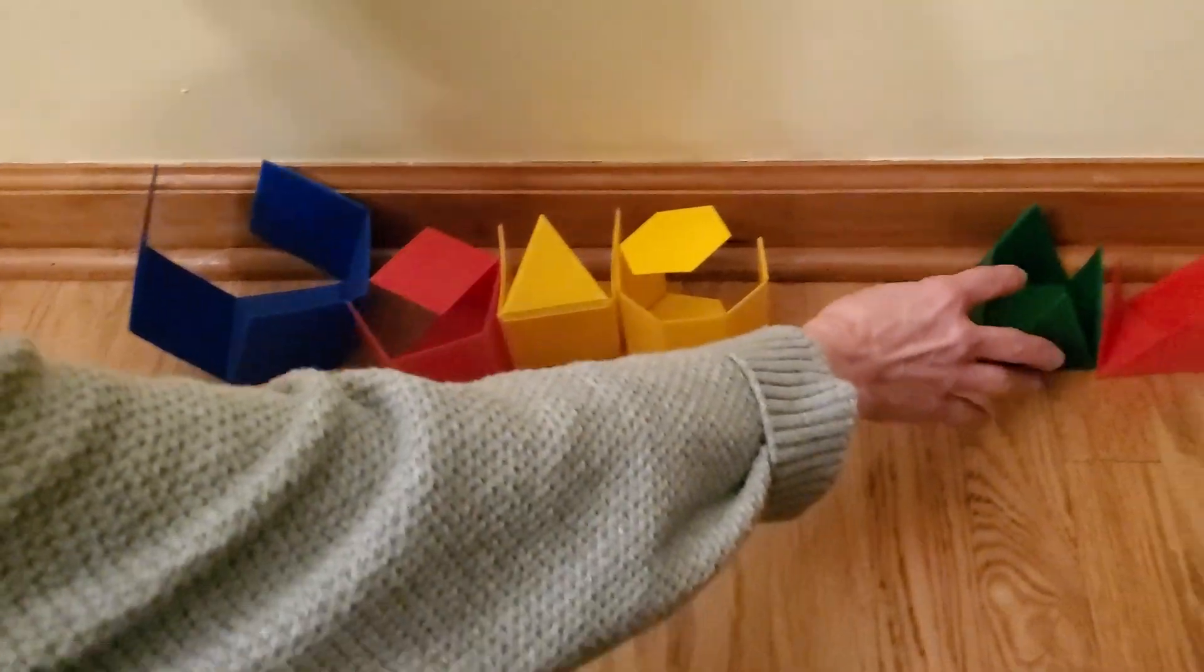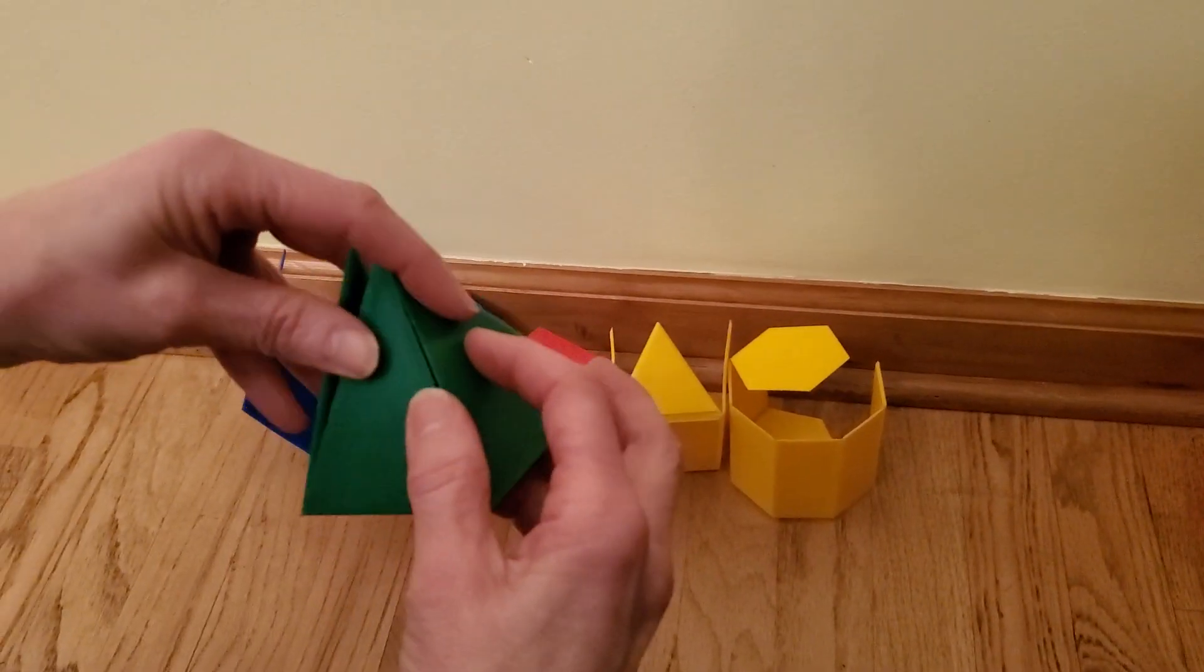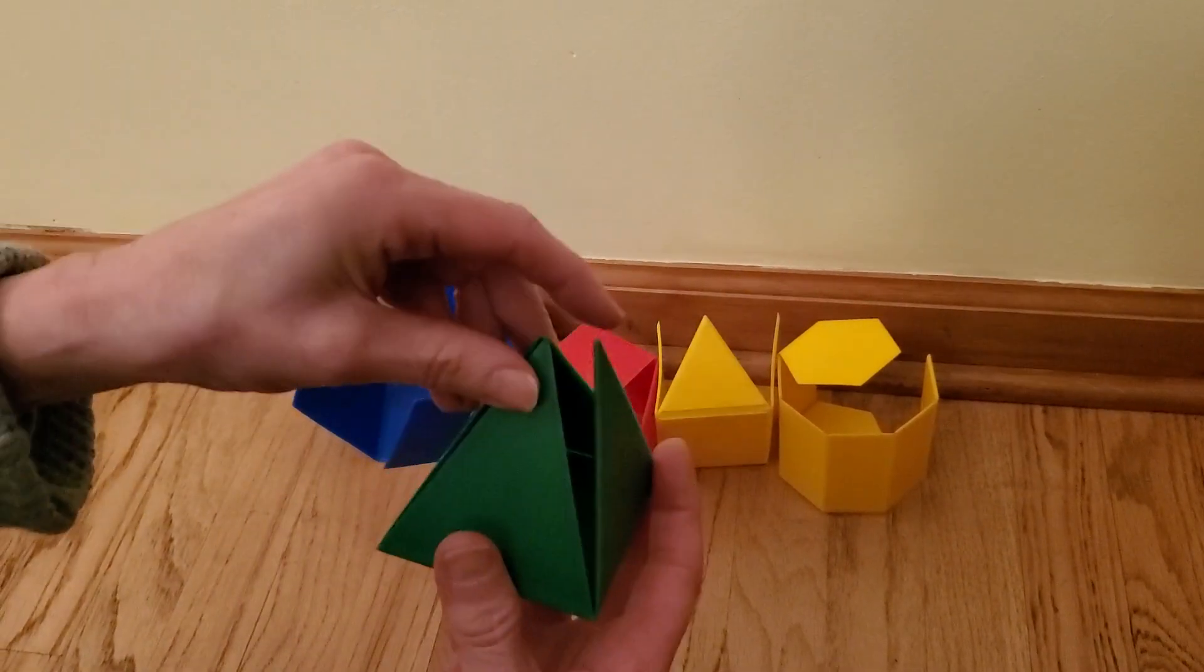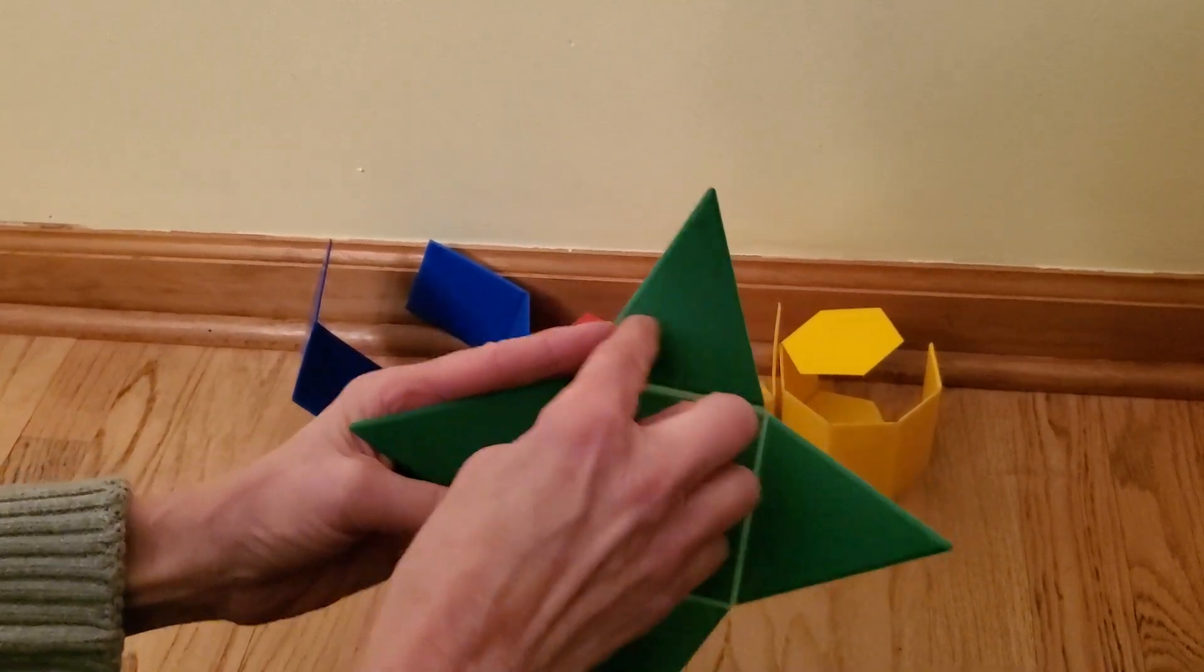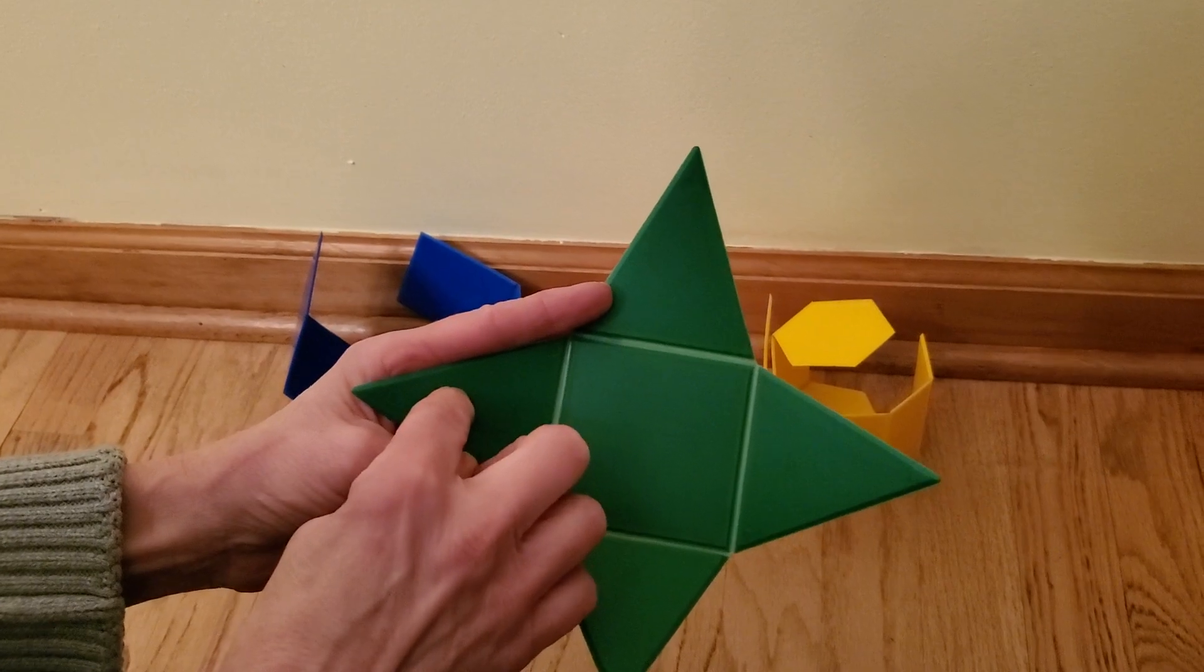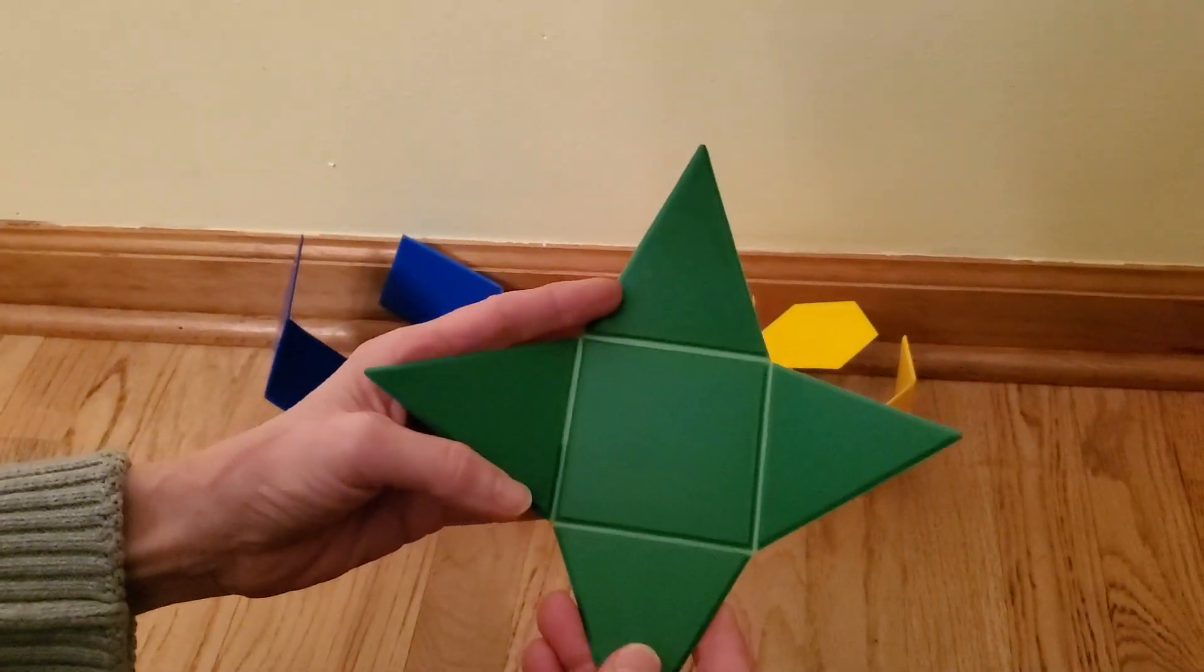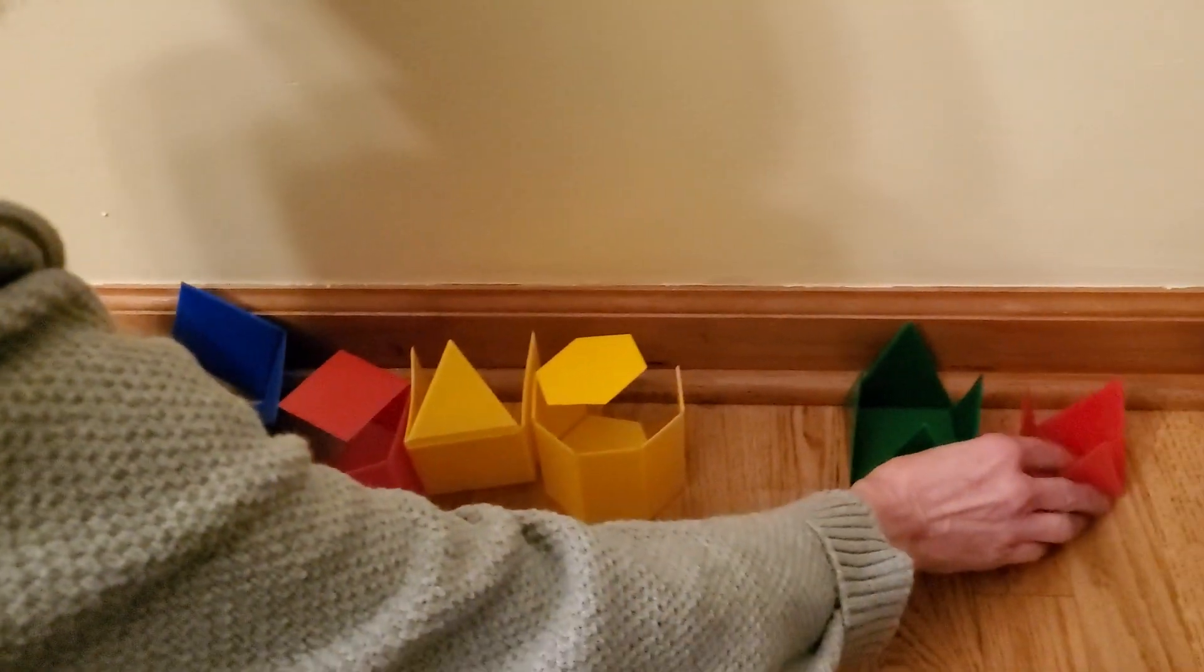Moving on to our pyramids. In solid form, this pyramid is called a square pyramid. The base is a square. Pyramids are mostly made up of triangles. There are one, two, three, four triangles and one square. There's a total of five faces on this square pyramid.